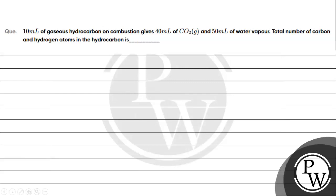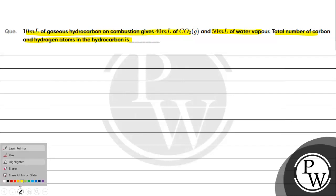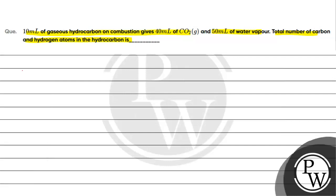Let's read this question. The question says: 10 ml of a gaseous hydrocarbon on combustion gives 40 ml of carbon dioxide and 50 ml of water vapor. The total number of carbon and hydrogen atoms in the hydrocarbon is dash. The key concept for this question is combustion of hydrocarbon.